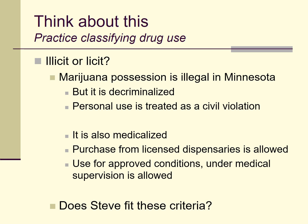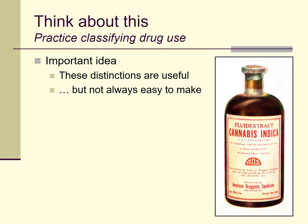So does Steve fit these criteria? It's hard to say without more information, but this example illustrates that these distinctions are useful but not always easy to make. This is not a great image, but you can see it's a fluid extract of cannabis indica — a medication you could have purchased with no prescription around the turn of the 20th century when marijuana and most other drugs were entirely legal. Marijuana is a fascinating drug in many ways, including its history of being treated as legal, illegal, or medicinal at different points over the last hundred years.